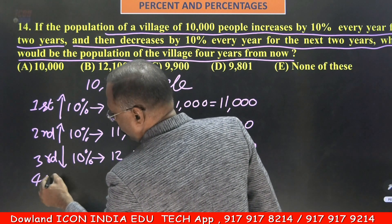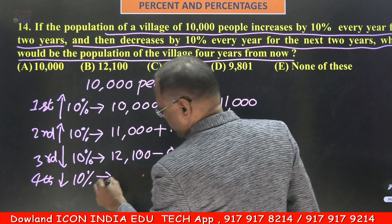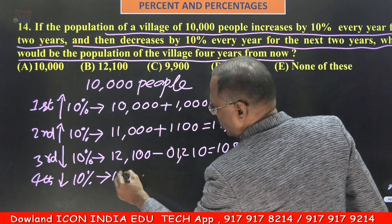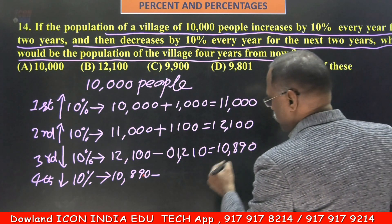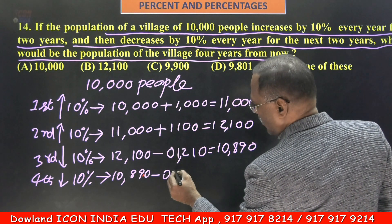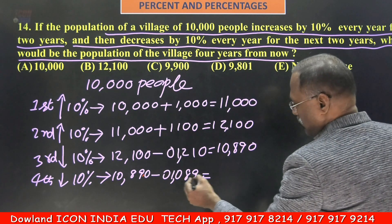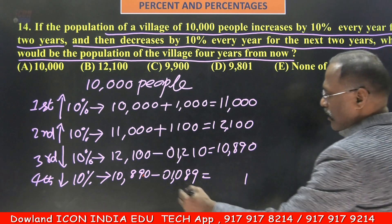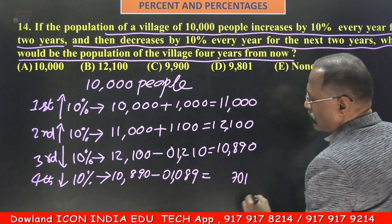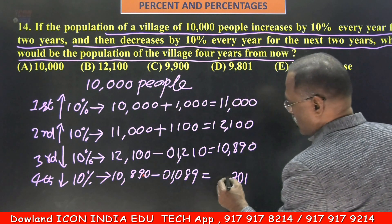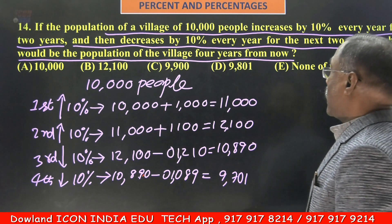Now for the 4th year, which we need: it is also decreased by 10%. Total population at the end of 3rd year is 10,890 minus 10% of it. Remove the zero — 10% of 10,890 is 1,089. Subtracting: 10 minus 9 is 1, 8 minus 8 is 0, giving 9,801.